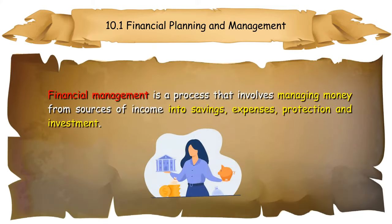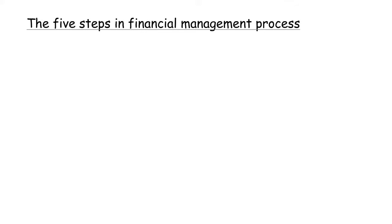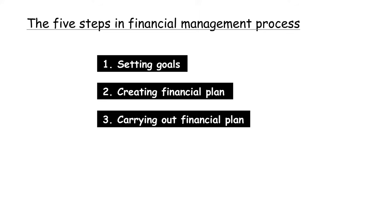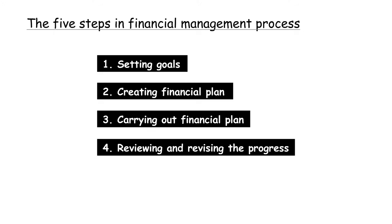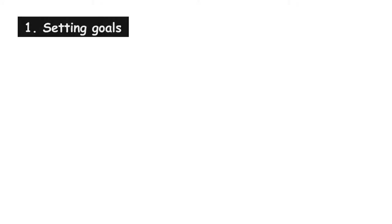Financial Management is a process that involves managing money from sources of income into savings, expenses, protection, and investment. The 5 Steps in Financial Management Process are: 1. Setting Goals, 2. Creating Financial Plan, 3. Carrying out Financial Plan, 4. Reviewing and revising the progress, 5. Evaluating Financial Status.